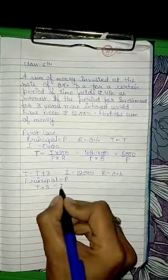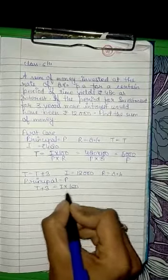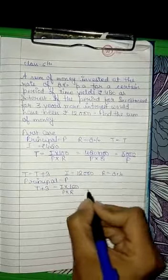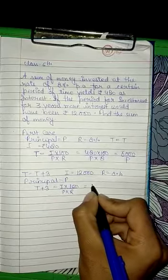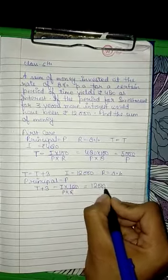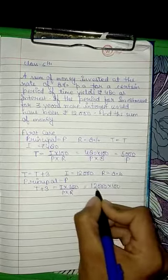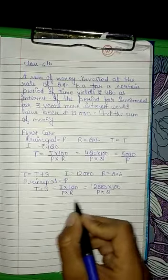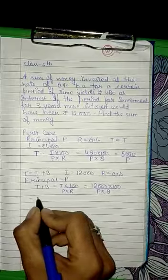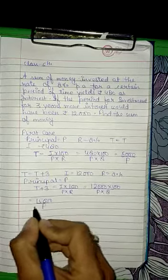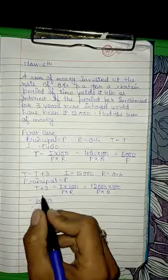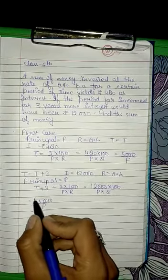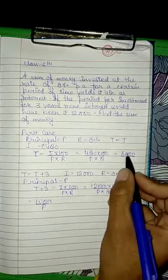So T plus 3 equals I times 100 divided by P times R, which is 12,000 times 100 divided by P times 8. When we solve this, we get 15,000 divided by P as the time after three years.